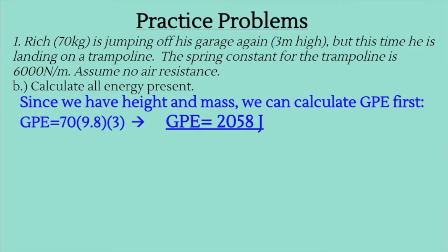Since we have height and mass, we can calculate GPE first. GPE equals mass times gravity times height. Mass is 70 kilograms, gravity is 9.8, and height is 3 meters. Multiplying all those together gives us GPE equal to 2,058 joules.